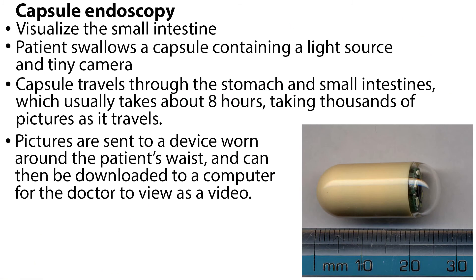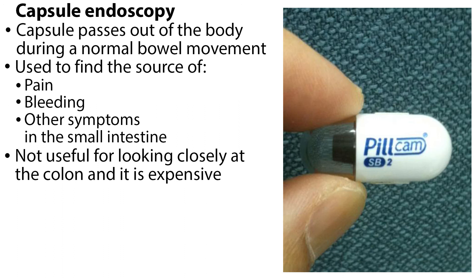A lot of the digestive tract can be seen using upper endoscopy or colonoscopy, but it is harder to see the small intestine. Capsule endoscopy is one way to visualize the small intestine, in which the patient swallows a capsule containing a light source and a tiny camera. The capsule travels through the stomach and small intestines, which usually takes about 8 hours, taking thousands of pictures as it travels. The pictures are sent to a device worn around the patient's waist and can then be downloaded to a computer for the doctor to view as a video. The capsule passes out of the body during a normal bowel movement.